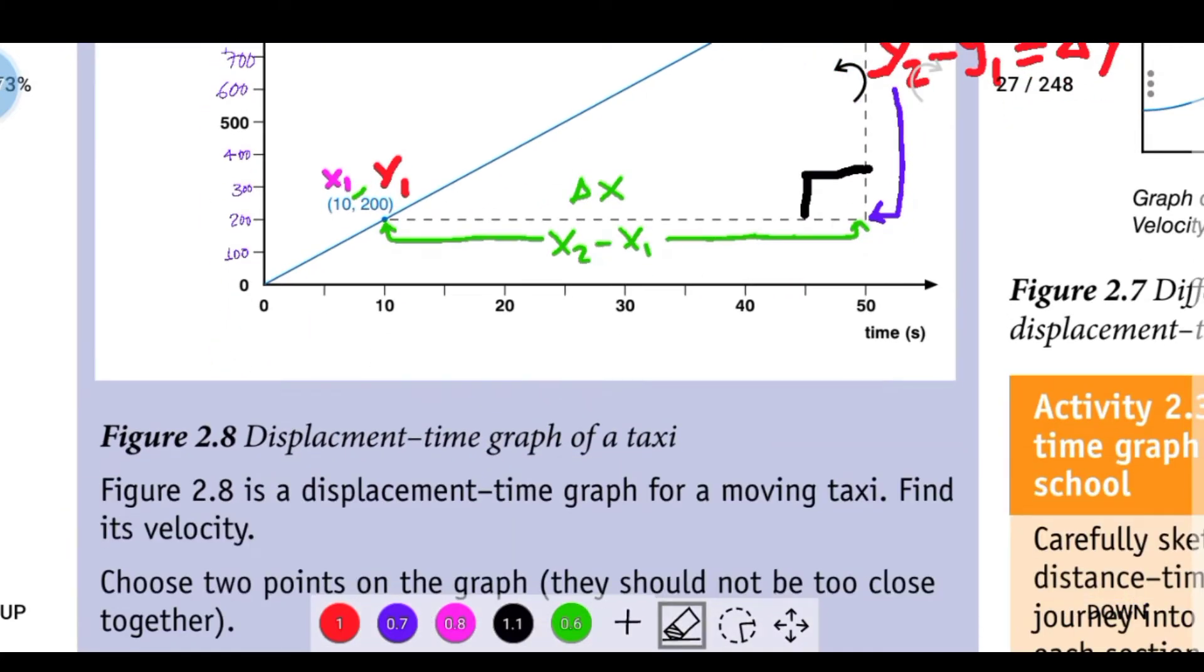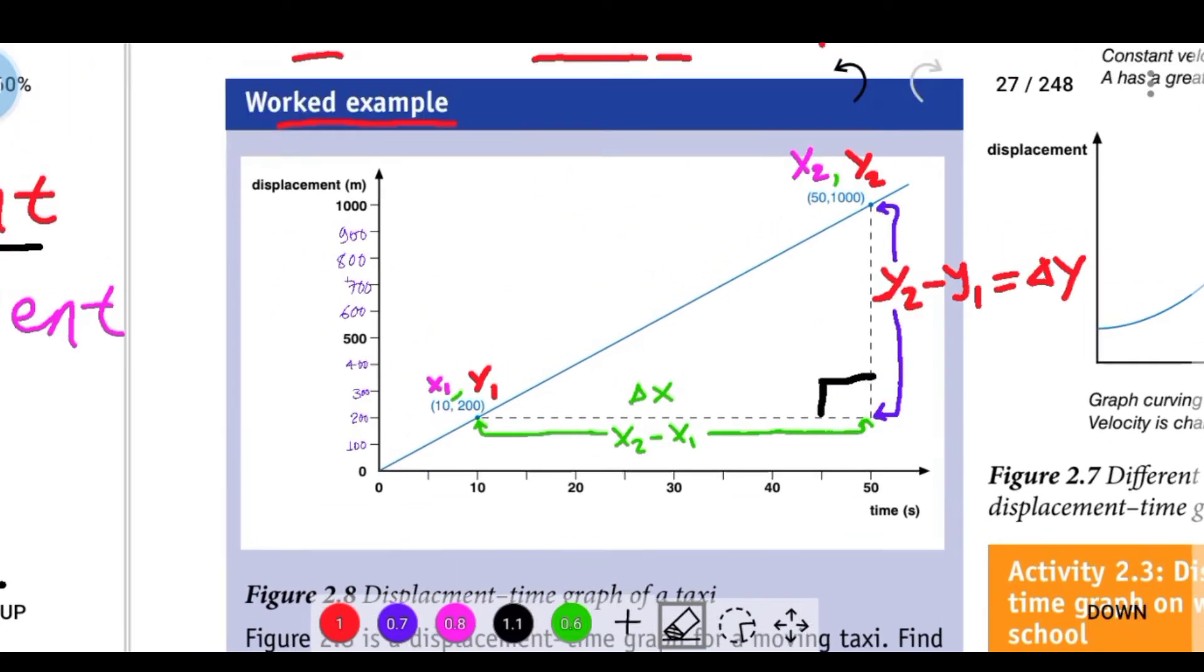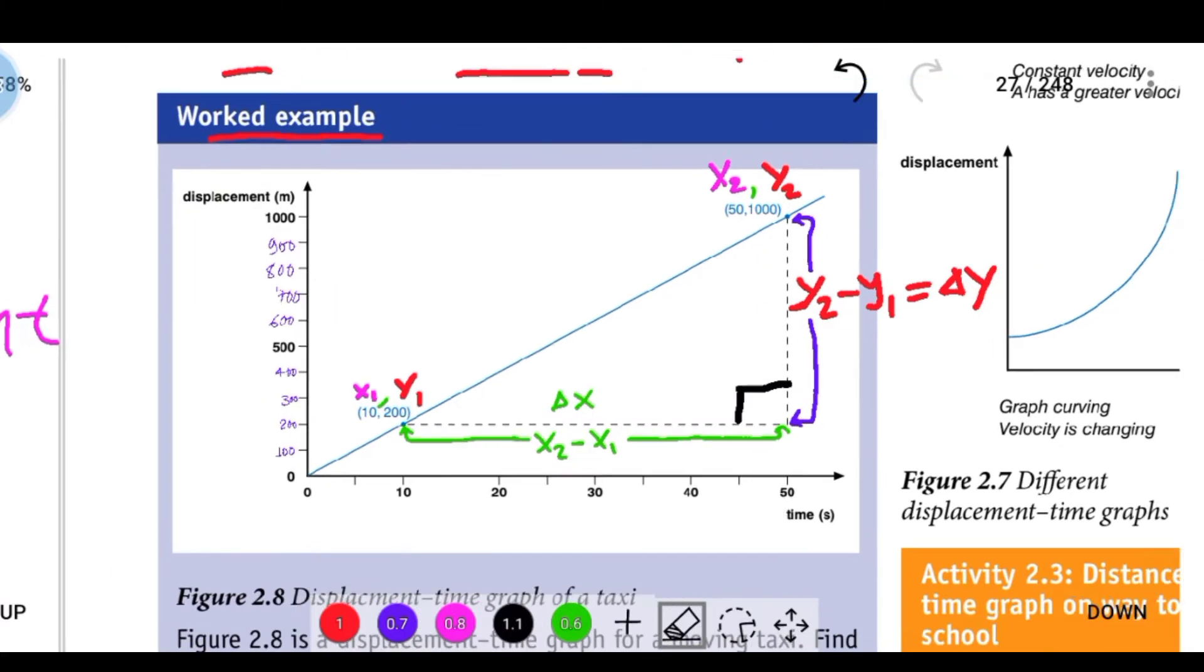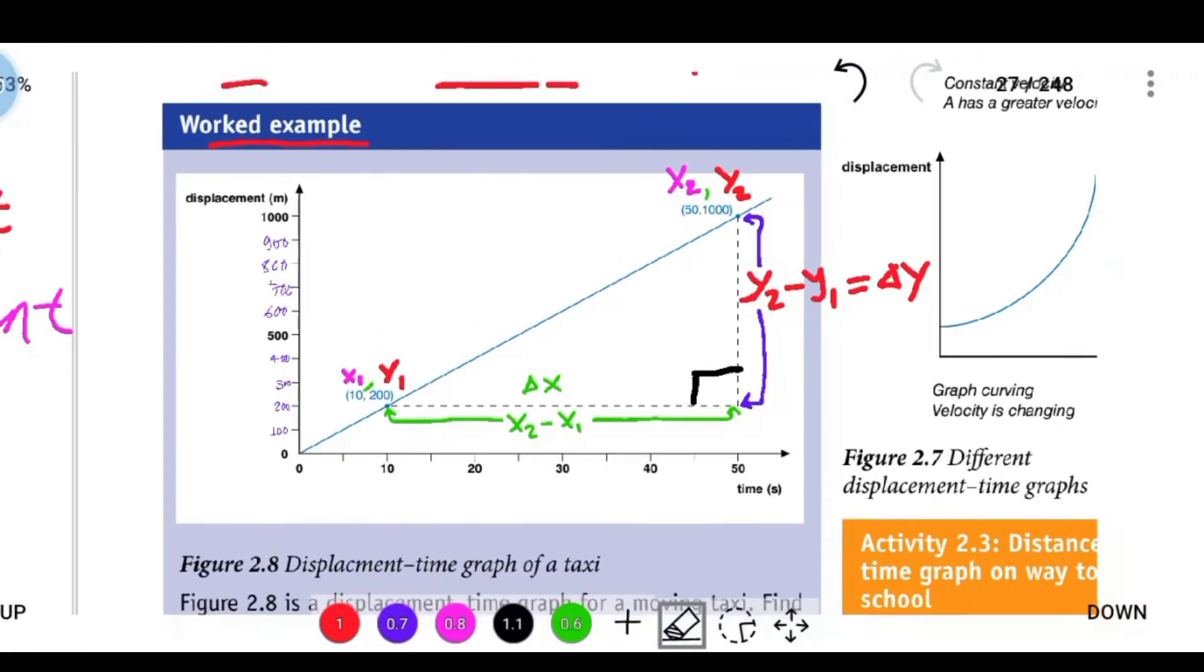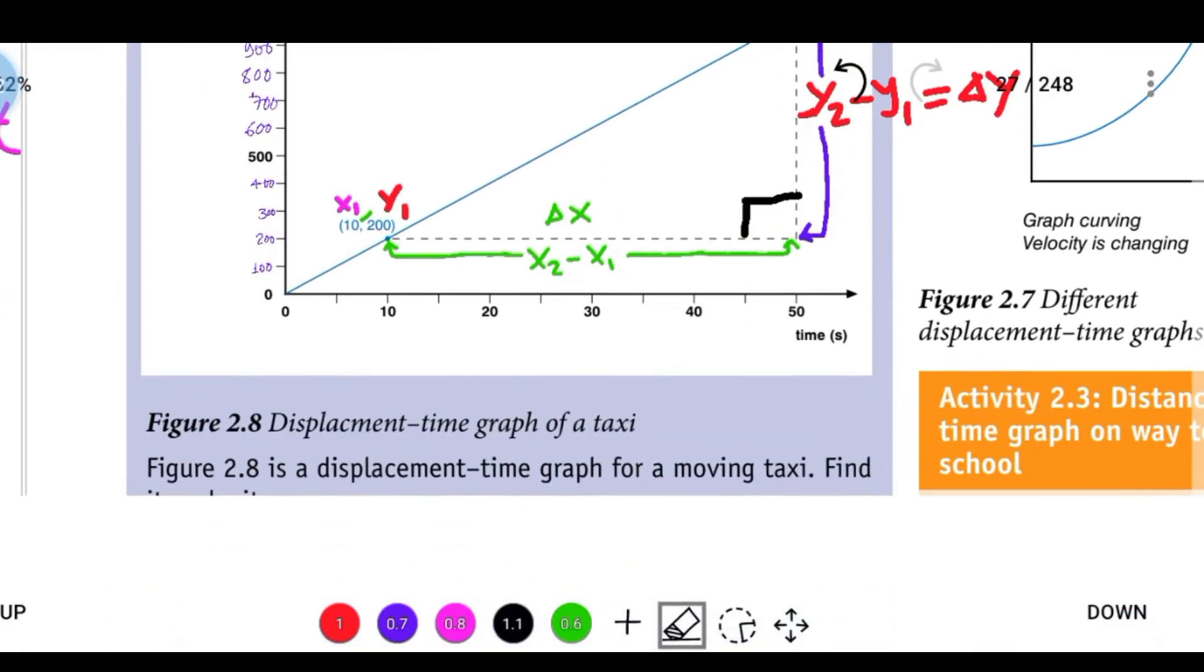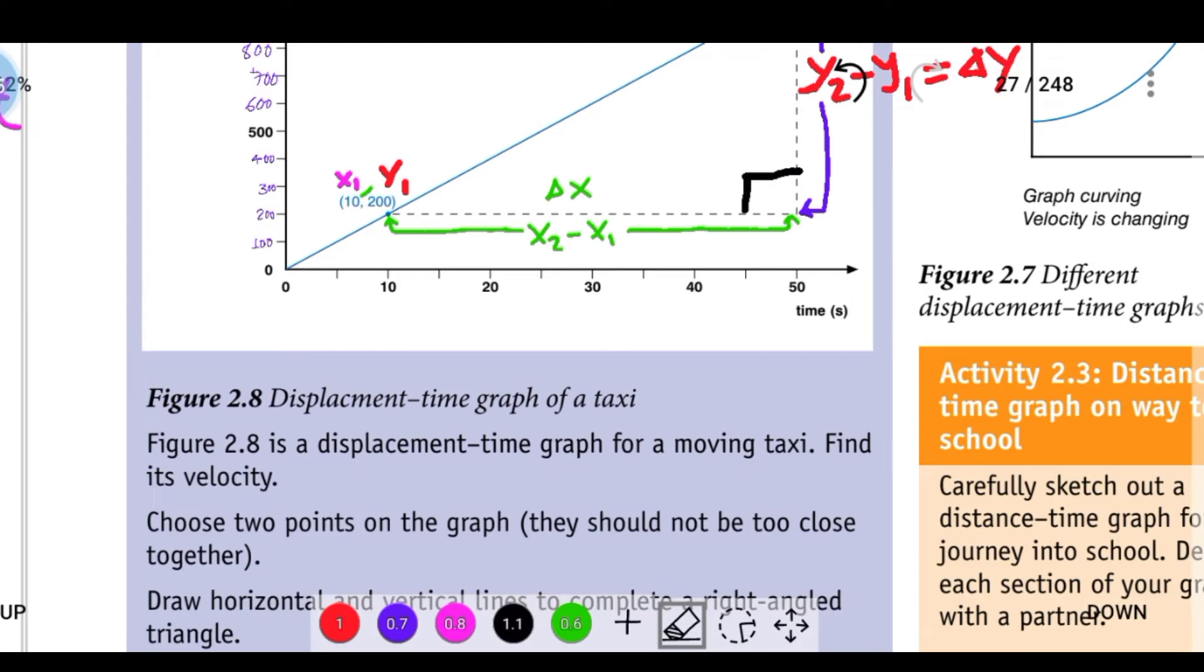Figure 2.8 shows a displacement-time graph of a taxi. Figure 2.8 is a displacement-time graph for a moving taxi. Find its velocity.